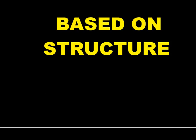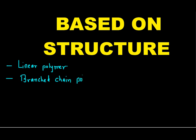In this video, we are going to talk about the classification of polymer based on structure. Based on structure, there are three types of polymer: the first one is called linear polymer, the second one is called branch chain polymer, and the third one is called cross-linked polymer. Now we will discuss one by one in detail.